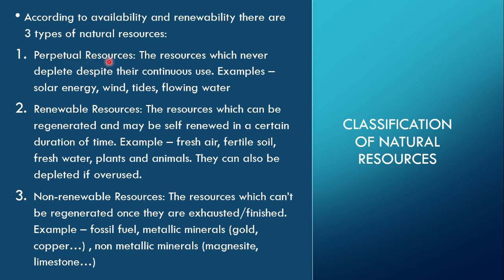Perpetual resources are resources which never deplete despite their continuous use. Even if we use them continuously, they don't get finished — for example, solar energy cannot be depleted no matter how much we use it. Renewable resources, as the name suggests, can be renewed or regenerated — they can be self-renewed within a certain duration of time. Examples include fresh air and plants and animals.